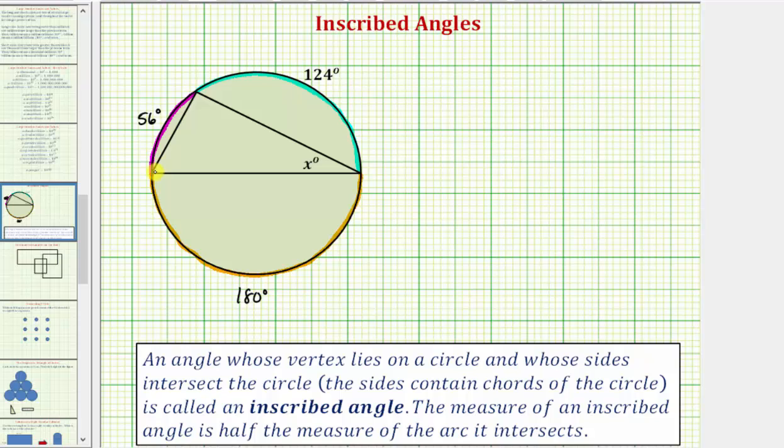And this is all we need in order to determine the value of x. Notice how this angle here is an inscribed angle that intersects an arc measuring 56 degrees. And therefore the measure of this angle is half of 56 degrees, which is 28 degrees. So this angle is 28 degrees, which means x equals 28.